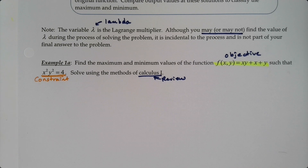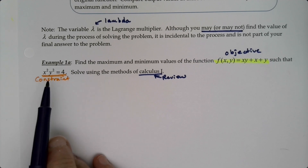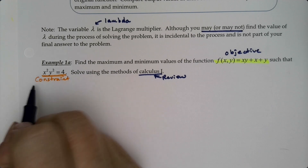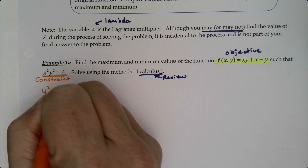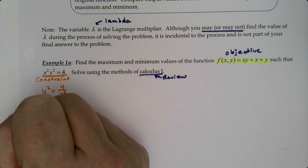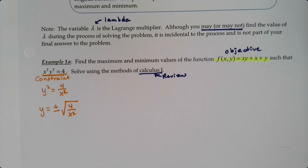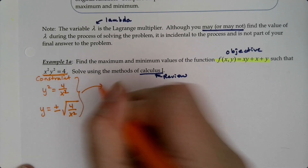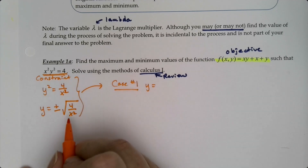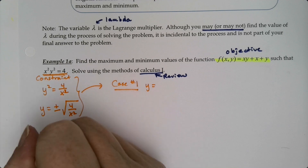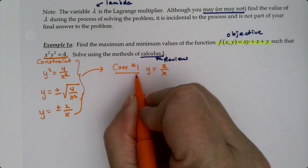To use Calc 1 we have to get rid of one of these variables, so we need to solve the constraint for y. So y squared equals 4 divided by x squared, and y equals plus or minus the square root of 4 over x squared, which is plus or minus 2 over x. That's what's going to make this tricky — we need to break it up into two cases. Case one: y equals 2 over x.